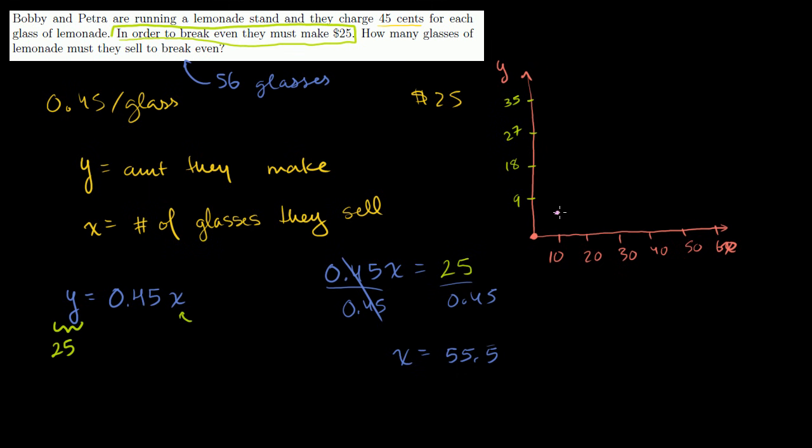And when they sell 10 glasses, they're going to make $4.50. 10 times 0.45. So that's right there. 20 glasses, they're going to make $9. We could keep going there. 40 glasses, they're going to make $18. You see their slope. When you move 10, you're going to have to go up $4.50. So this graph is going to look something like that. Should be a straight line.